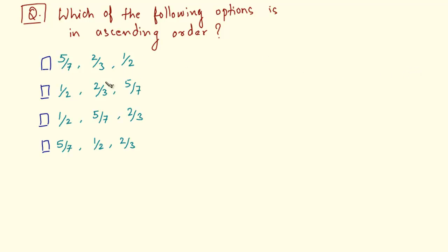Which of the following options is in ascending order? So basically what you can do is find out the decimal fraction of each of these three numbers and then determine which one of them is greater than the other.